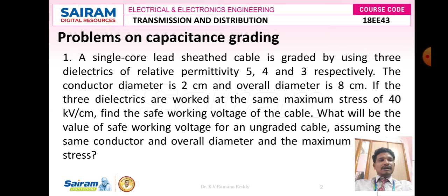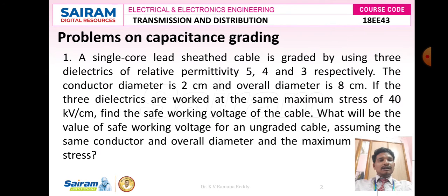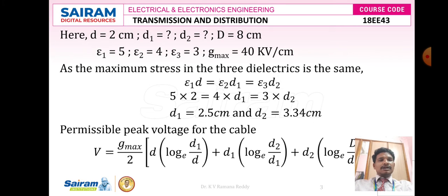The diameters given are: conductor diameter is 2 cm, meaning small d equals 2 cm. Overall diameter is 8 cm, so capital D equals 8 cm. We do not yet know d1 and d2. As the electrical stress in the 3 dielectrics is the same, we apply the formula: epsilon 1 times d equals epsilon 2 times d1, which equals epsilon 3 times d2.